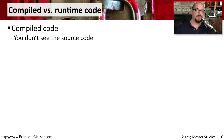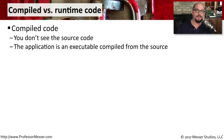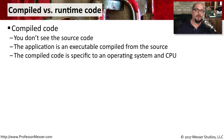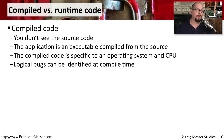A lot of the software that we run in our operating systems is compiled code. This is when the developer has taken all of the source code and compiled it into an executable. Once that occurs, you don't get to see the source code — you're only provided with this single executable. All of this compiled code has been compiled for a very specific operating system and CPU, so you have to make sure that when you're compiling the software it matches what the end user is expecting. During the compilation, the compiler will tell you if there are any logical errors or bugs that need to be corrected. They can then be resolved, you can recompile, and provide the end user with a more bug-free application.